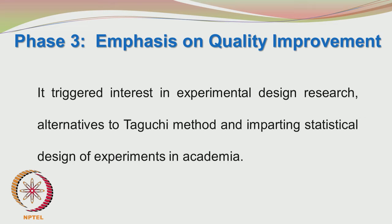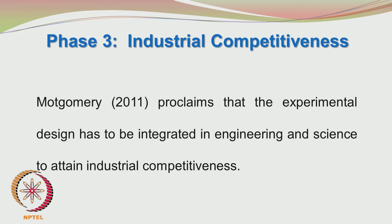There was also considerable research activity to find alternatives to Taguchi's method. Quite importantly, the concept of statistical design was also implemented in academic institutions. This gives a hint that sufficient theory had developed by the late 1970s — for example, the book by Box and Hunter was published in 1978. By the 1980s it had become a full-fledged academic course with sufficient theory. Montgomery, in his Design of Experiments book, proclaims that experimental design has to be integrated in engineering and science to attain industrial competitiveness.